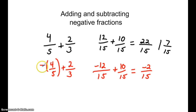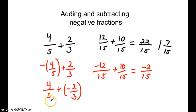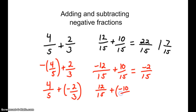Now let's see how the negative sign would impact things if 4 fifths is positive, but we make the 2 thirds negative. How would that change our problem? Well, we would still have 12 fifteenths as a positive, but we would be adding negative 2 thirds, and the negative sign would be with the 10 fifteenths. We are adding a positive 12 with a negative 10, and that will be a positive 2 fifteenths.